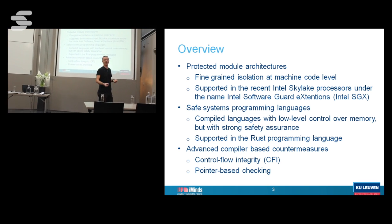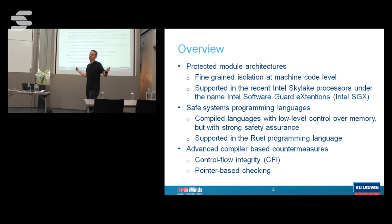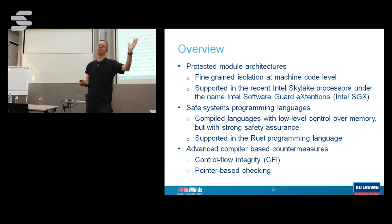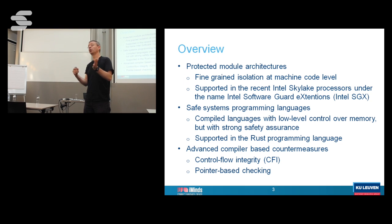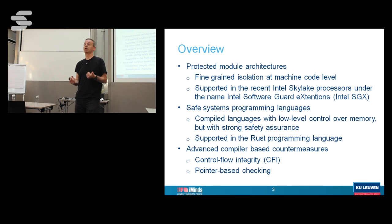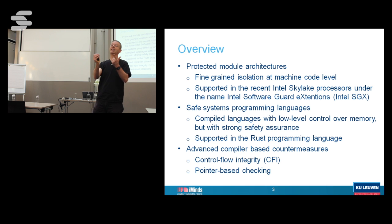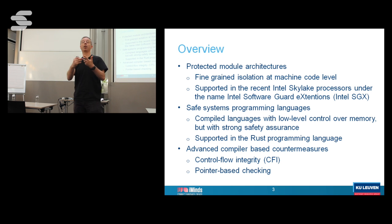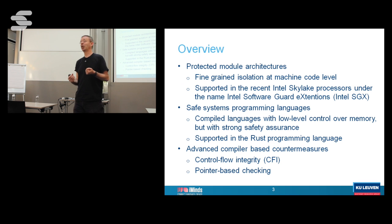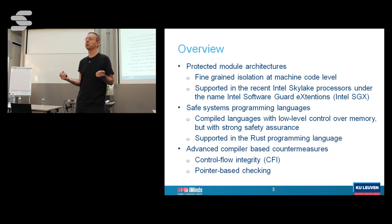The second topic is safe systems programming languages. We all know that from a security point of view a safe language like Java, C#, or Scala has many advantages over C, but it also has important disadvantages for systems programming — performance is one, but also the fact that you don't have fine control over how things get allocated, and the garbage collector may interrupt you. These disadvantages are apparently enough that C and C++ together are still by far the most popular languages today, even for new developments.